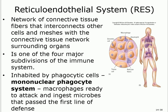The reticuloendothelial system is a network of connective tissue fibers that interconnect cells and make a network surrounding different organs like the spleen, liver, and bone marrow. It is one of the major divisions of the immune system. What does it contain? It contains phagocytic cells — the mononuclear phagocytic system — which are the monocytes that become macrophages.